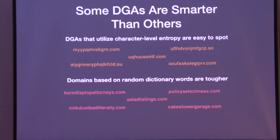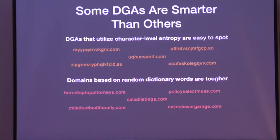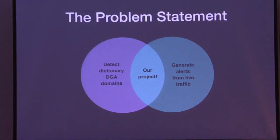We started to look at how we could detect DGA domains and realized there's a divide — two different subgroups: some that combine random characters and some that combine random words. The random character ones are fairly easy to spot. But the random words take a half second longer — you have to read them and think: 'board laptop attorneys,' which is a real domain DGA Mauer has used, doesn't make sense. 'Cake's lower garage' — what could that domain possibly be tied to? So we set out to detect this subcategory of DGAs, what we call dictionary DGAs, where they're taking words from a dictionary and randomly smashing them together. Could we build a model that could detect dictionary DGA activity and operate in real time, generating alerts for analysts?